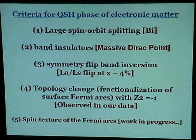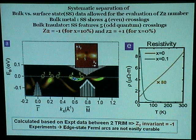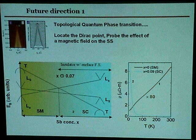Our summary is that it goes through some sort of Z number change in the band-inverted regime — just like a 3D analog of a mercury telluride quantum well experiment. The future directions we plan to pursue include locating the real Dirac point and exploring it further.